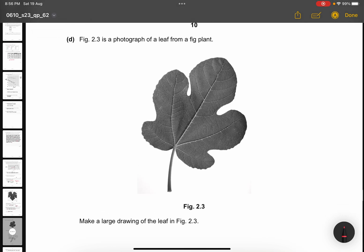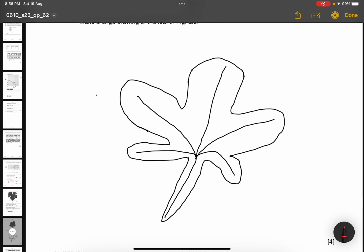Part D. Figure 2.3 is a photograph of a leaf from a fig plant. Make a large drawing of the leaf. This is just an example of a large drawing. The requirement of getting 4 marks is by making sure you have a clear line, one single line. The size is about 65 mm wide. And number 3 is having 5 lobes - 1, 2, 3, 4, 5 lobes. And number 4 is 1 main vein in each lobe. So, 1, 2, 3, 4, 5 veins. Then, you get your 4 marks.